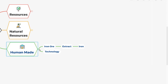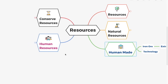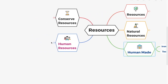It is important to remember that natural substances become resources only when their original form has been changed. For example, iron ore was not a resource until people learned how to extract iron from it. Technology is also a human-made resource.